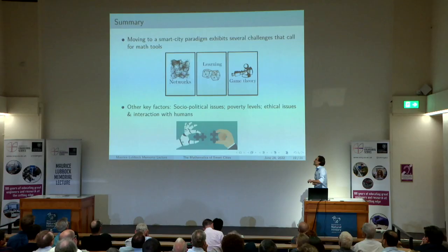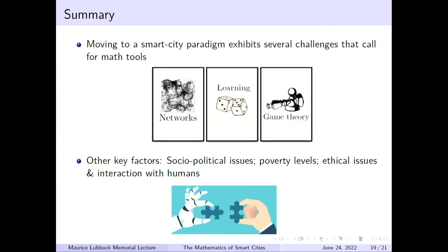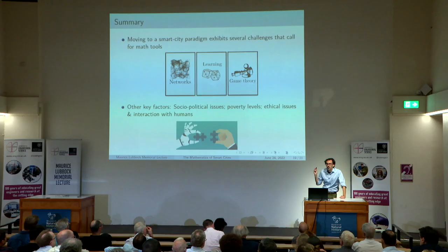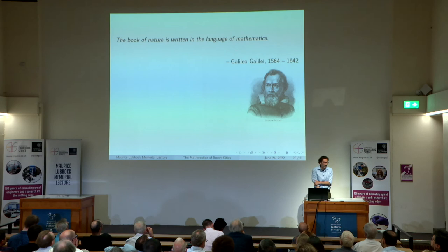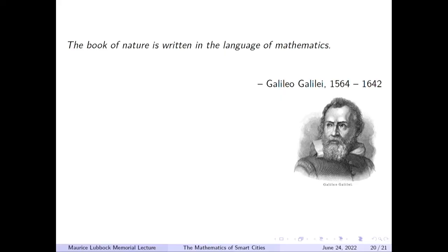This brings me towards the end of this talk. To sum up, I tried to outline several mathematical tools — ranging from networks, game theory, and statistical learning — that I believe we have to use in a synergistic manner to tackle challenges that appear in several of the problems we face in our everyday life in smart cities. Of course, smart cities are much broader than that — they involve several sociopolitical and ethical issues — however, I will not touch upon those as that would be yet a different talk. I would like to conclude with one of my favorite quotes by Galileo, which also inspired the title of my presentation, and is completely aligned with my belief that in an engineering science department, as engineers, if we want to engineer real-life problems like smart cities, we have to use the language of math. Thank you very much for your attention. I will be happy to take any questions.